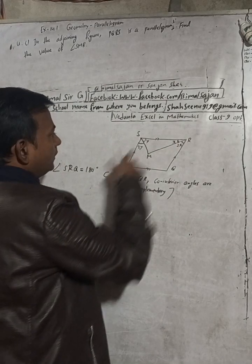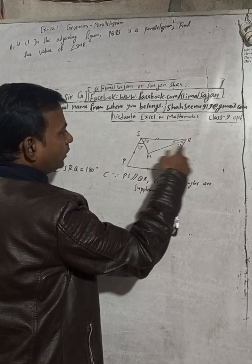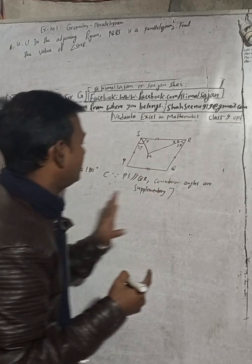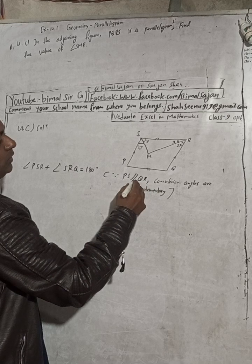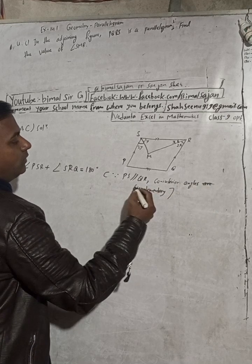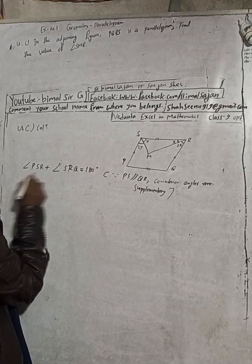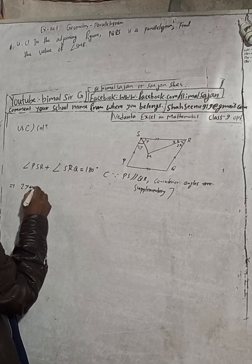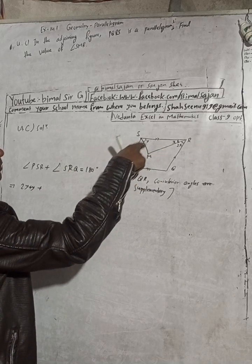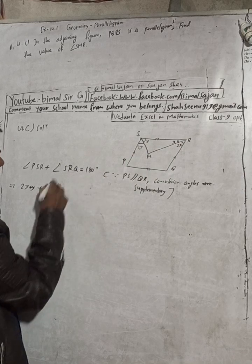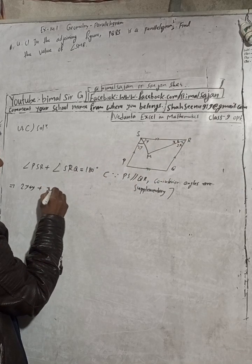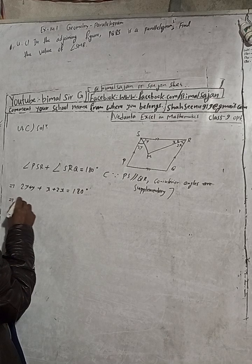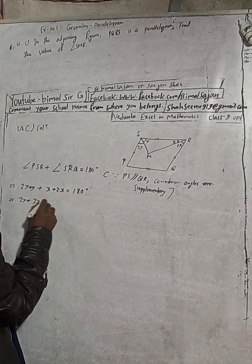Now, angle PSR equals 2y plus y, and angle SRQ equals x plus 2x. So substituting: 2y plus y plus x plus 2x equals 180 degrees. That gives us 3y plus 3x equals 180 degrees.